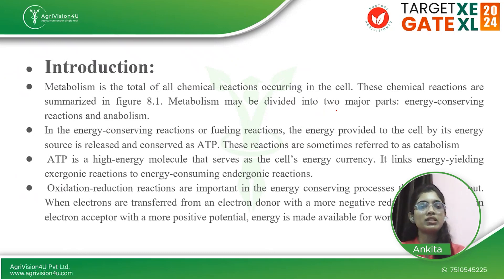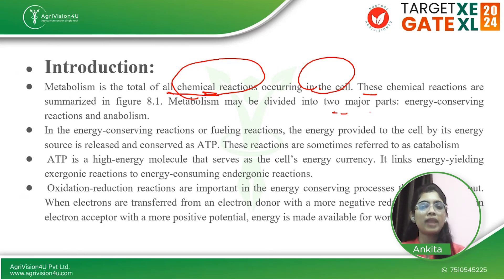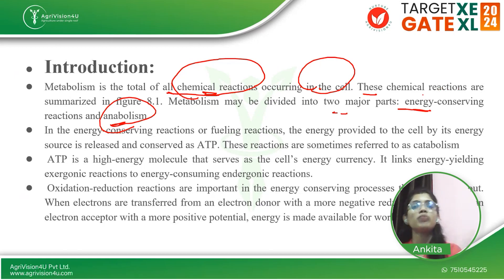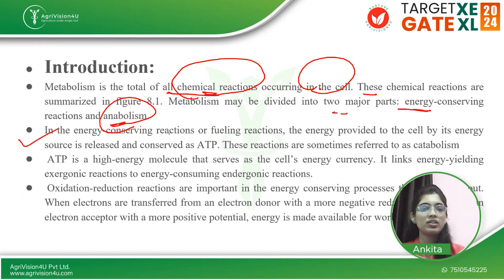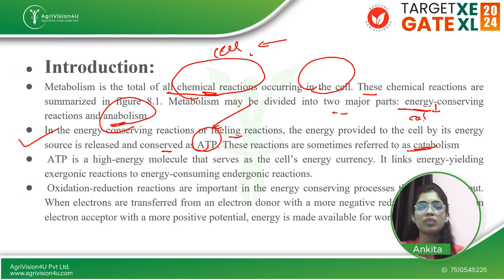Metabolism is nothing but the total of all chemical reactions. Whenever you go for metabolism, there must be chemical reactions, and including all those chemical reactions will lead to the proper procedure of metabolism occurring inside the microbial cell. Metabolism can be divided into energy-conserving reactions and anabolism. Energy-conserving means it will use some energy to metabolize, and anabolism means it will build without consuming energy from outside. In the energy-conserving or fueling reactions, energy provided to the cell by the energy source is released and conserved in the form of ATP — adenosine triphosphate. These reactions are referred to as catabolism.